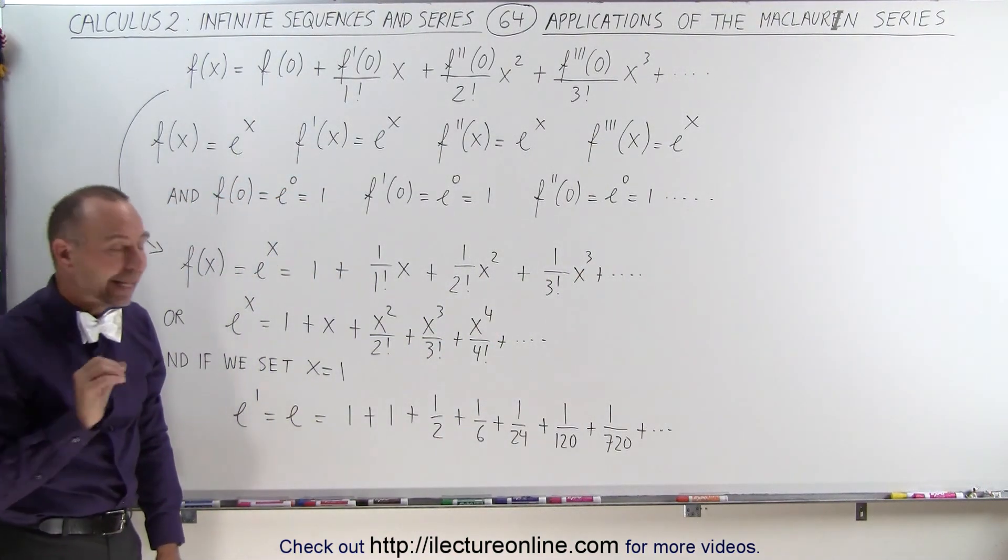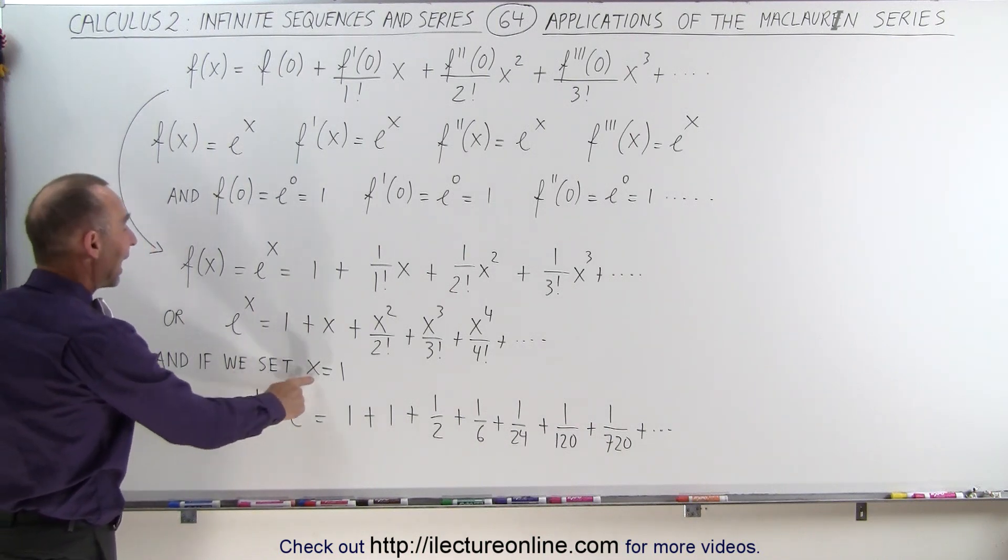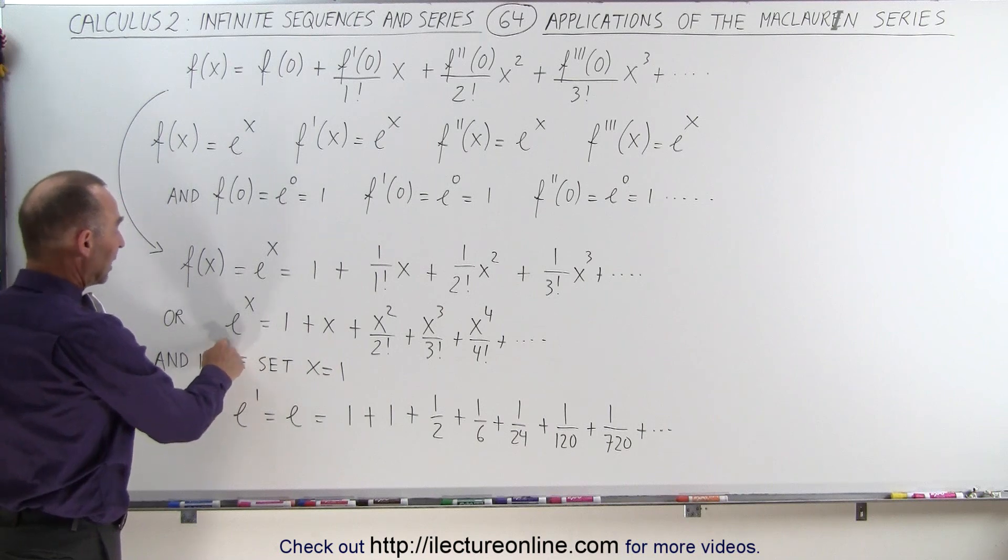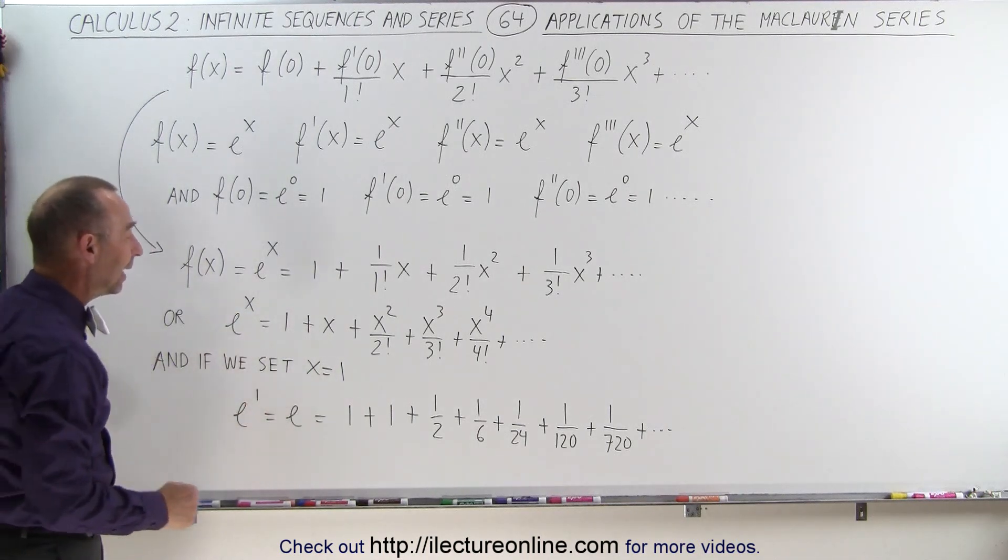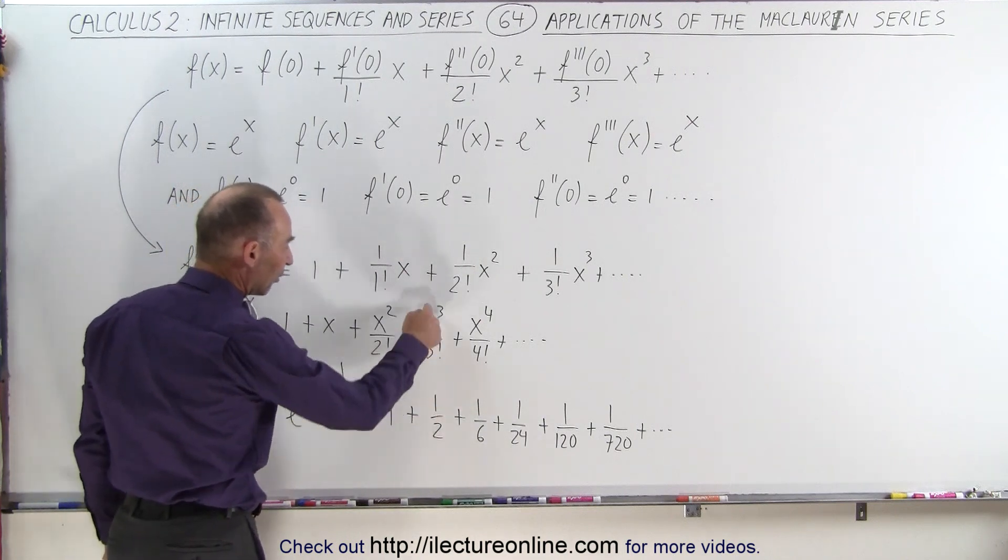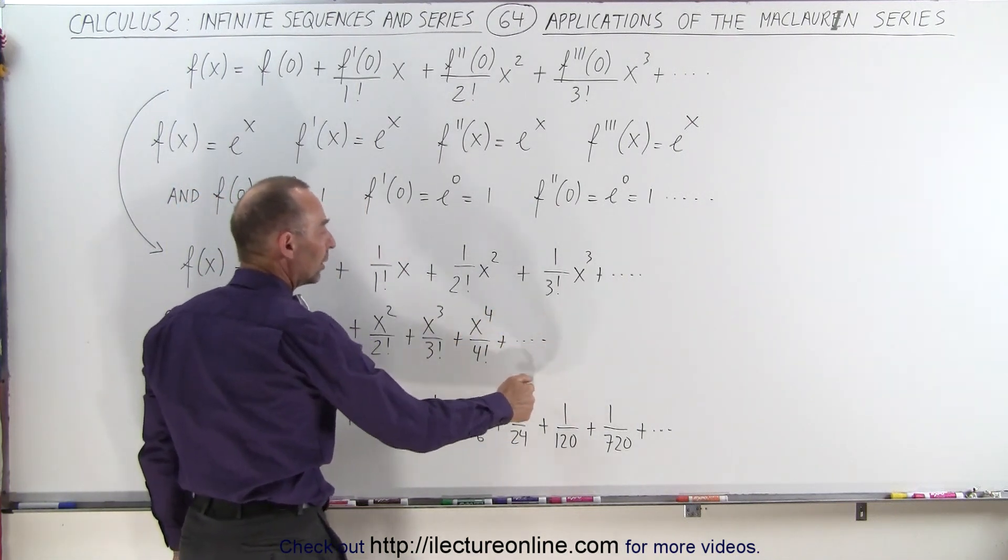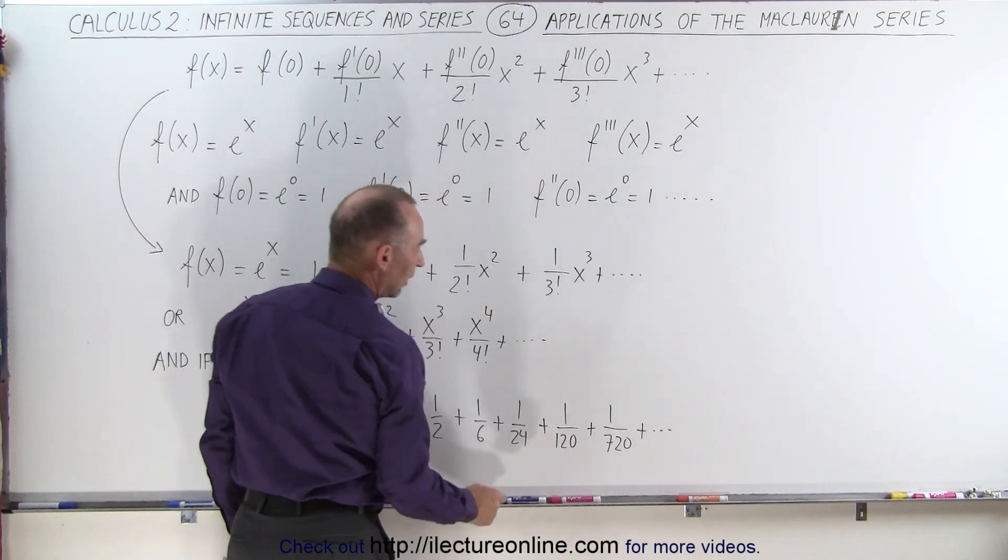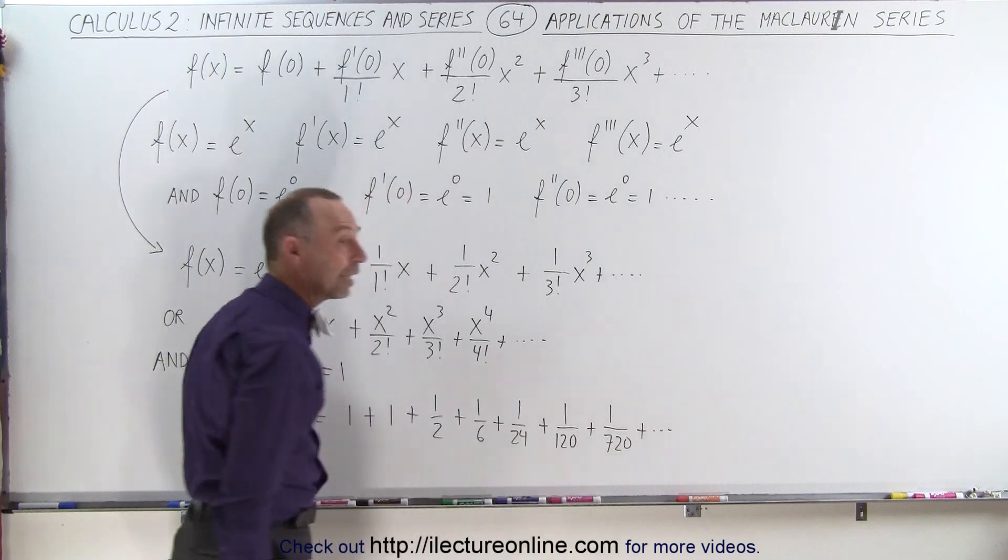And if we're trying to find the value for e, we simply set x equal to 1. So instead of e to the x, we get e to the 1, which is the same as simply e. And then we replace every x by 1. So we get 1 plus 1 plus 1 half plus 1 sixth plus 1 twenty-fourth plus 1 one hundred twentieth plus 1 over 720. Notice that this is 4 factorial, 5 factorial, 6 factorial, and so forth in the denominator.